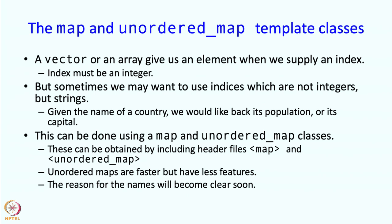The reason for the name map should be clear because the map is really mapping the name of a country to the population, or it is mapping the name of a country to a capital. So it is like a mathematical map. A mathematical map maps elements of one set to elements of another set. The meaning of unordered map will become clear a little bit later.